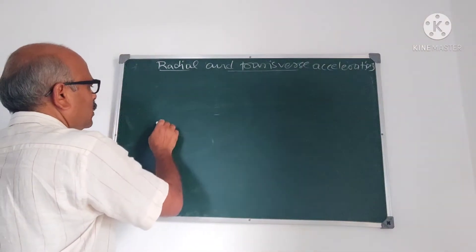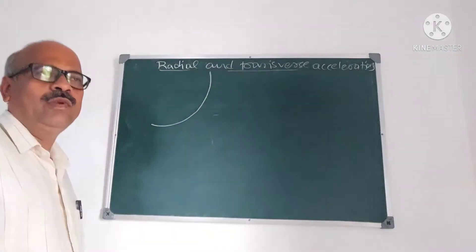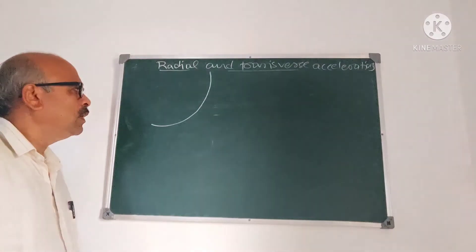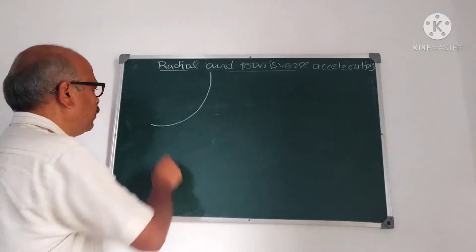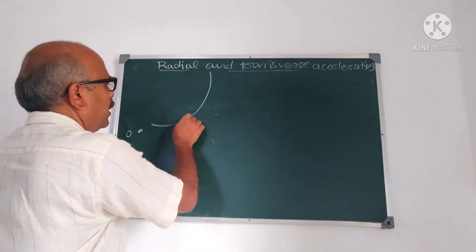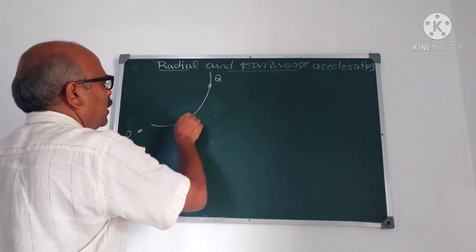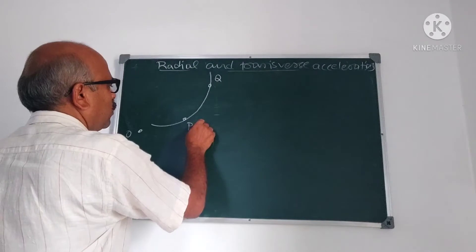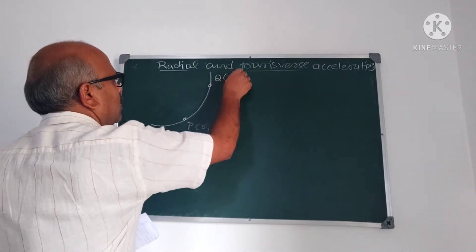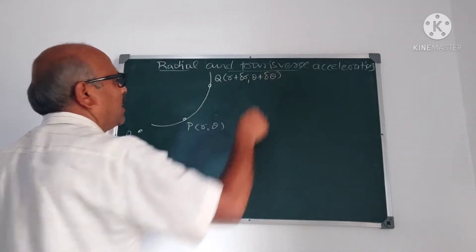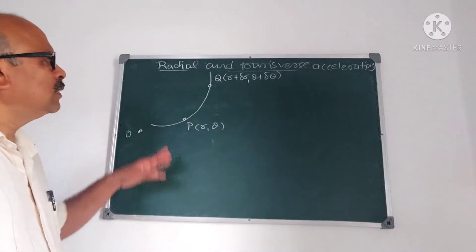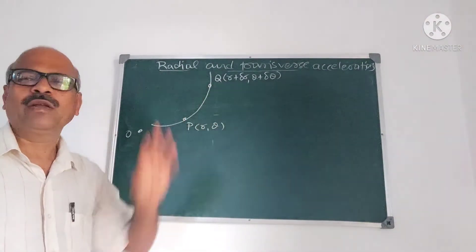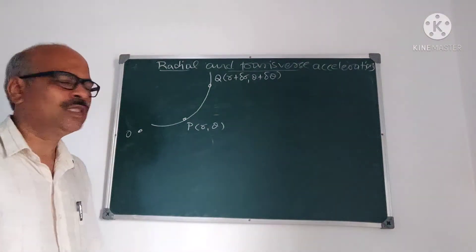For example, suppose this is the path of the particle — that is, if we join the position of the particle at different points of time, we get a smooth curve. Let O be the fixed point called the pole, and P and Q are the positions of the particle at time T and T plus delta T. The coordinates of P are (R, theta) and Q are (R plus delta R, theta plus delta theta). The important thing now is the component of acceleration along and perpendicular to the radius vector, which are called radial and transverse accelerations.